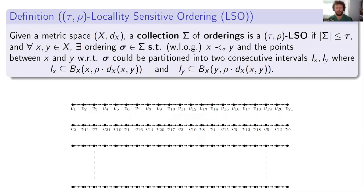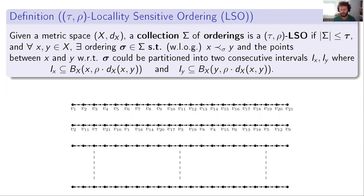Locality-sensitive orderings is a collection of orderings — simply some permutations over the points of a metric space — that will preserve distances somehow. It's a projection to a one-dimensional line.